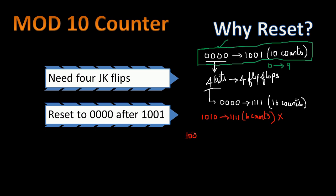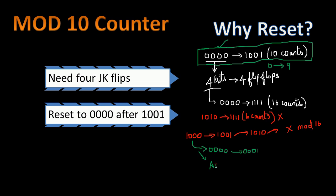A normal mod 16 counter will go all the way up to 1111. But in our case, after 1001 the counter should go back to 0000 instead of proceeding to 1010. So the count starts from 0 to 9 and then resets back to 0 again. We have to make sure the count goes from 1001 back to 0000, and one method to achieve this is resetting to 0 when the count reaches 1010.